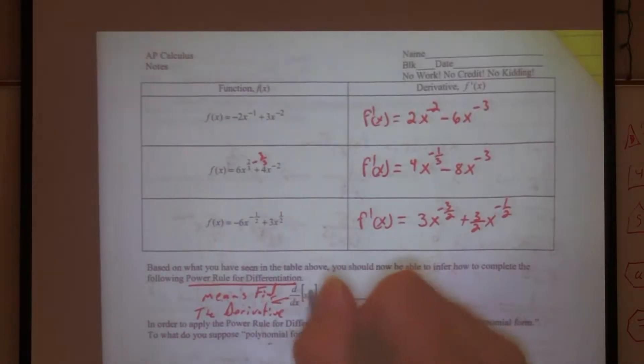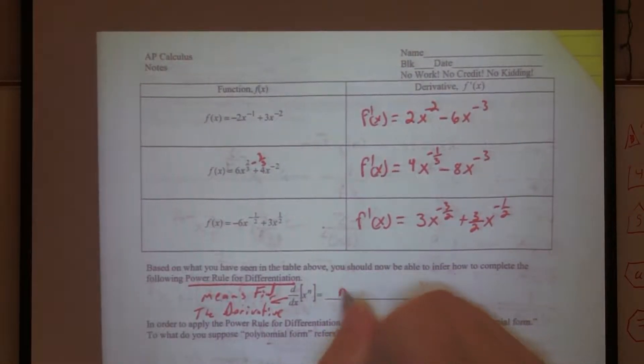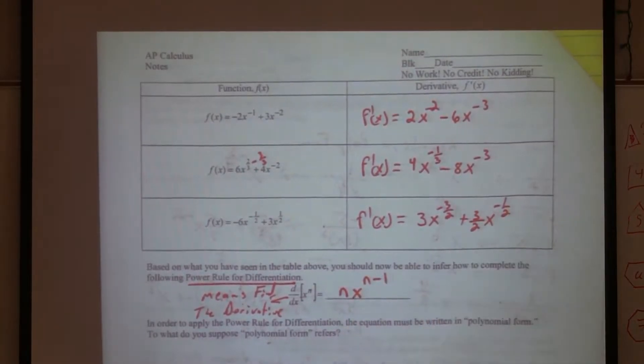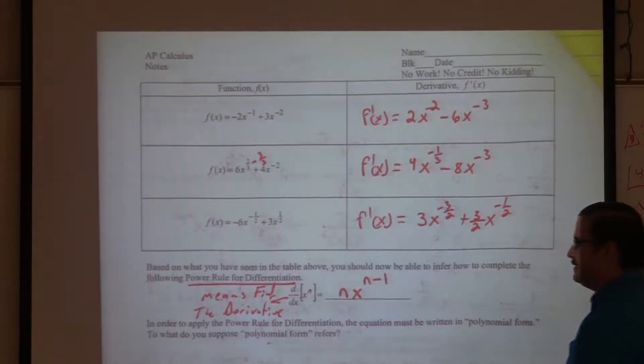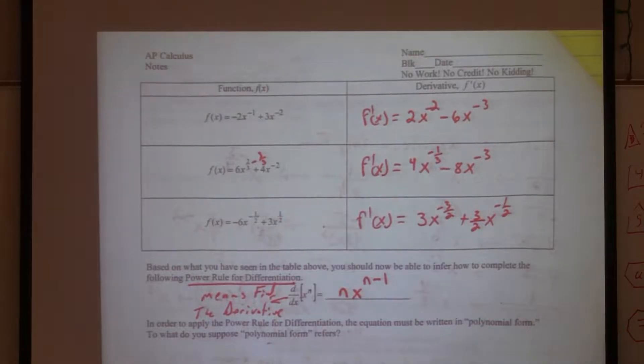So if we end up with something that looks like this, what would we do? We said n times the number in front, which is the 1, x to the n. What would I do to that power? Minus 1. Okay, so this is the rule for finding the derivative of anything in this particular form. Pretty easy? Ready to do some examples?